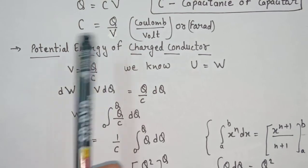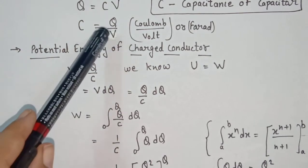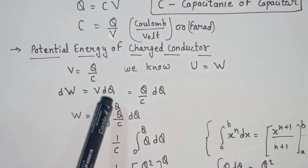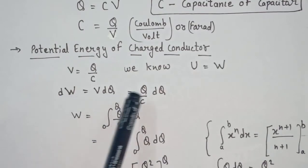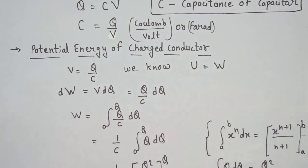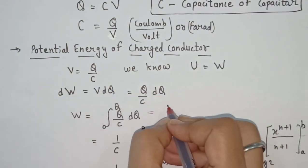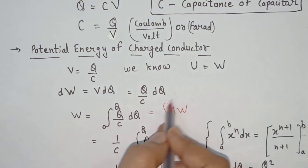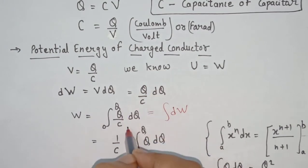Now, from C = Q/V, we get V = Q/C. Substituting this value of V into the work done formula: dW = V dq becomes dW = (q/C) dq. To find the total work done W, we integrate: W = ∫dW = ∫(q/C) dq. The limits will be from 0 to Q, because the initial charge on the conductor is 0 and the final charge is Q.